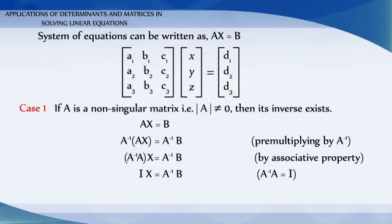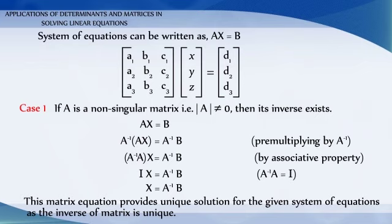So we get I multiplied by X equals A inverse into B, which is nothing but X equals A inverse into B. This matrix equation provides a unique solution for the given system of equations, as inverse of a matrix is unique. This method of solving system of equations is known as the matrix method.